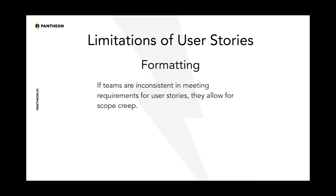In that example about the content manager working with images, the story doesn't define what content types we're talking about, whether there are multiple event types or image types, whether it's a specific field, whether they're being tagged — there's no scope in there. That could grow into a huge story, or it could be a really basic one. You don't really know; you can't deliver that one with confidence.